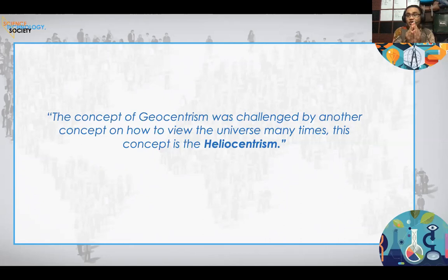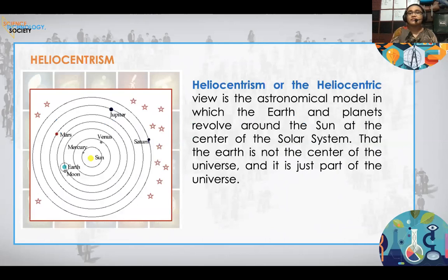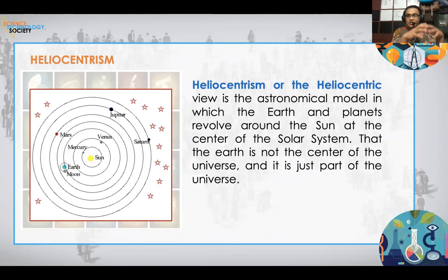The old normal was that the Earth is the center of the universe. But with heliocentrism — the concept where the sun is the center of the solar system — the Earth, like other planets and stars, merely revolves around the sun. The Earth is not the center of the universe; it's just a part of the universe. Geocentrism was accepted by the majority, accepted by the Church, and accepted by philosophers during that time.